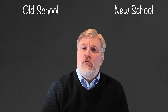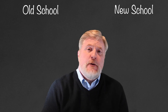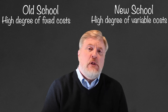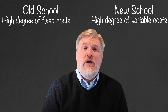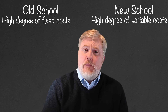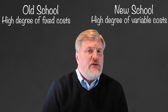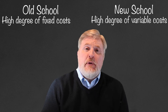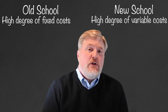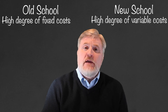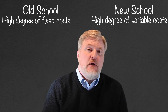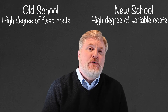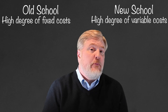Imagine two companies — let's call them Old School and New School. Old School relies on fixed production capacity; they contract their employees on a salary basis and they own their own facilities. New School, on the other hand, takes advantage of the gig economy. Their employees are not on fixed salaries — when demand is up, they clock in and go to work, but when demand is down, they go out. New School rents their facilities and charges rent based on square footage used each month, so they can flex warehouse and production capacity up and down depending on how busy they are. Old School has a mostly fixed cost structure while New School has a highly variable cost structure.